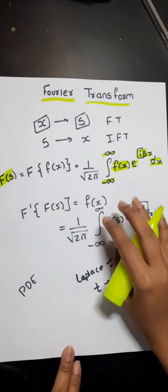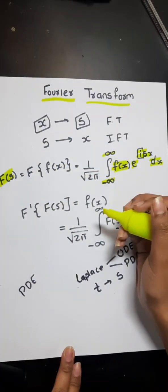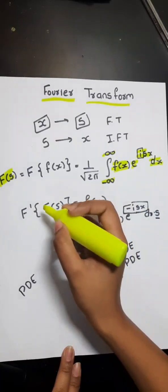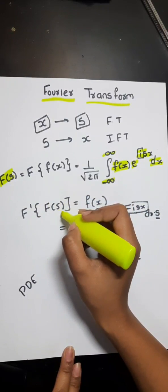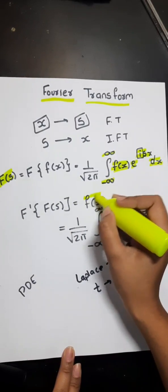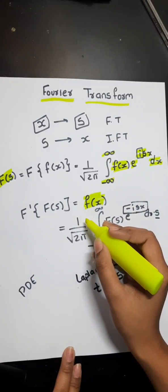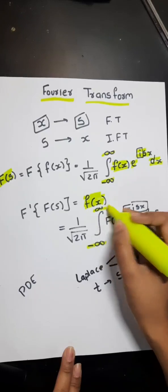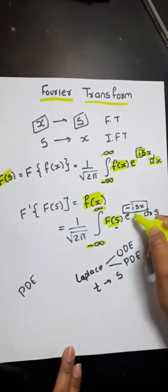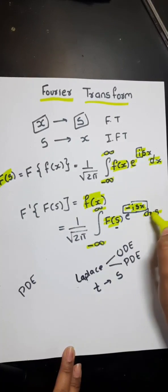This is the basic formula of Fourier transform and now we are going to do inverse Fourier transform. Inverse Fourier transform is represented by f dash of capital F of s is equal to f of x, the original term, original function. The formula goes like 1 upon under root 2 pi from minus infinity to plus infinity, the Fourier transform into e raised to power minus iota s x into d s.